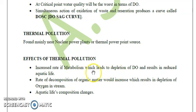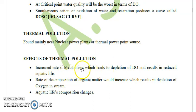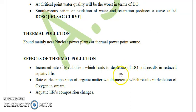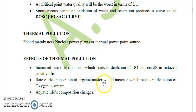The first effect is an increased rate of metabolism — both catabolism (breakdown of complex substances into simple substances) and anabolism (formation of complex substances from simple ones). As temperature increases due to thermal pollution, the rate of metabolism increases, which results in increased demand for oxygen, causing depletion of dissolved oxygen in the water body and death of most aquatic life.